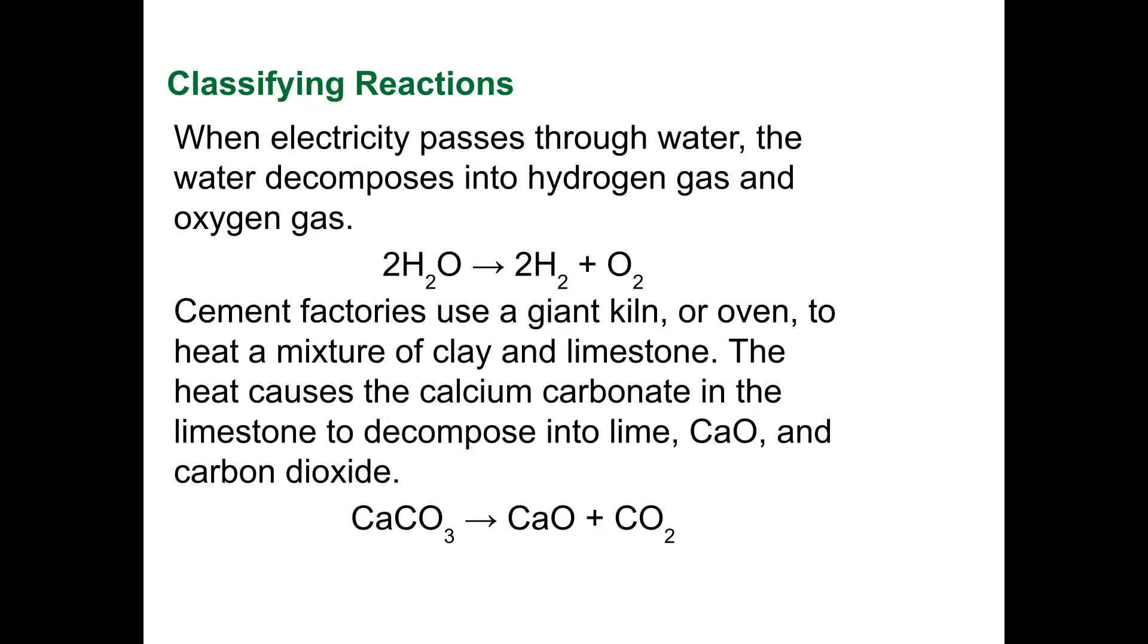Cement factories use a giant kiln or oven to heat a mixture of clay and limestone. The heat causes the calcium carbonate in the limestone to decompose into lime. And so here's the chemical reaction. You have this, and when you add a little heat, it breaks down into this.